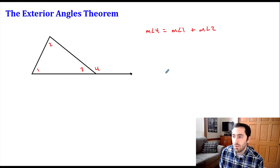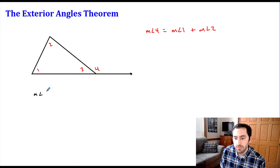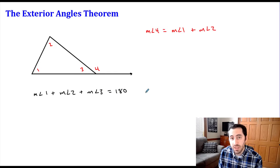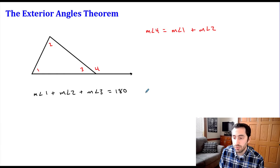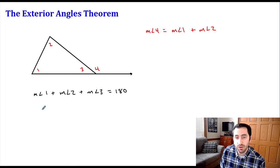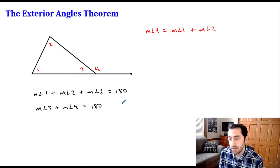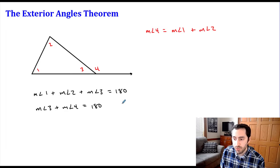Now I want to justify this and convince you that it's true. We know from the triangle sum theorem that the measure of angle one plus the measure of angle two plus the measure of angle three equals 180 degrees. Looking at the relationship between angle three and angle four: these are a linear pair — they're adjacent angles right next to each other forming a straight line — so together they're also 180 degrees. The measure of angle three plus the measure of angle four equals 180 degrees.